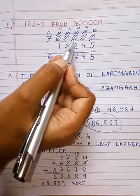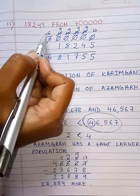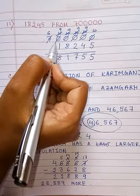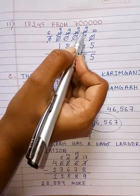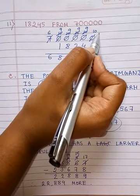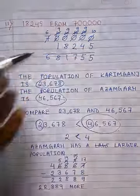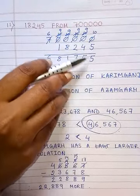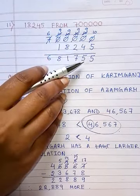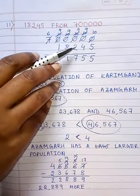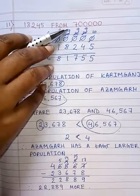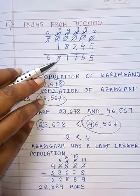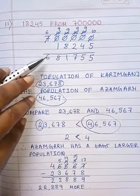Here all digits are 0, so start from 7,00,000 — write down 6,00, then cancel 0, it becomes 9, and the last one becomes 10. Now 10 is greater than 5, so 10 minus 5 is 5. 9 minus 4 equals 5. 9 minus 2 equals 7. 9 minus 8 equals 1. 9 minus 1 equals 8. And this is 6.